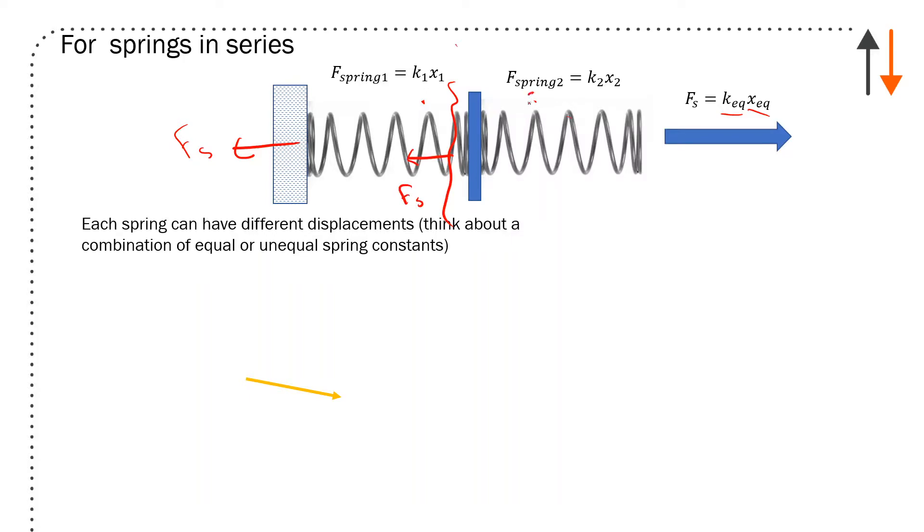The force of the spring is going to be the same. So the force of the spring equals force of spring one, which equals force of spring two, which is k_equivalent times x_equivalent. Or here, k_s times x_s equals k_1 times x_1 equals k_2 times x_2. What that also says is that the spring displacement x_s or x_equivalent is going to equal x_1 plus x_2.